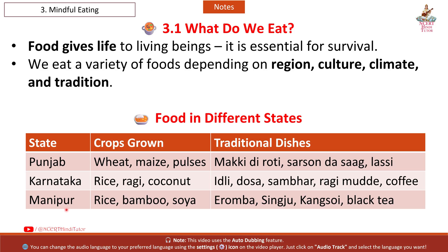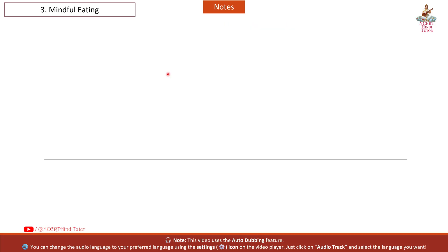Next state: Manipur. Crops grown: rice, bamboo, soya. Traditional dishes: Aromba, Sengju, Kangsoi, Black Tea.